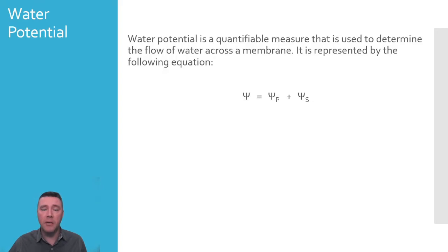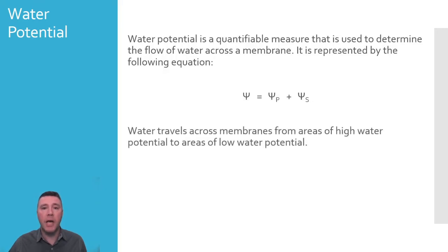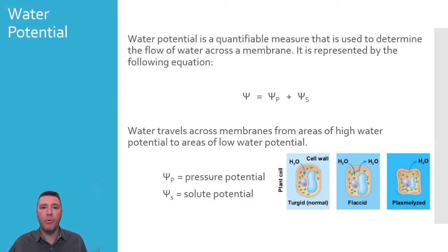Psi sub p, pressure potential, and psi sub s, solute potential. Pressure potential is the result of physical mechanical pressure exerted on a cell, and is analogous to filling a balloon with water. As more water enters, pressure potential increases. This component of water potential is especially important in how plant cells maintain their rigidity.